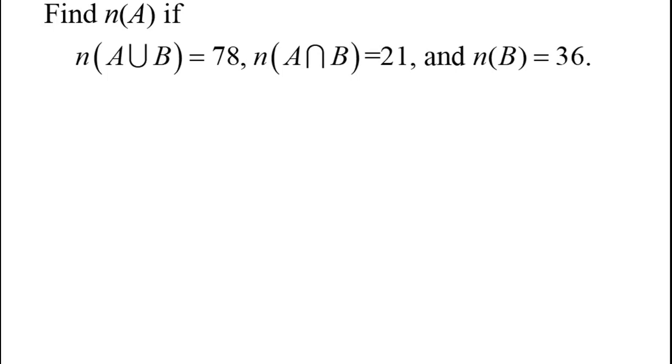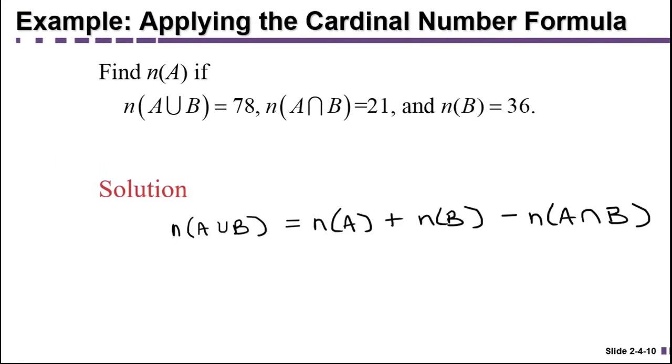One way to work this problem is just to plug into the cardinal number formula, which relates the number of elements in the union with the number of elements in the intersection. The number of elements in A union B is the number in A plus the number in B minus the number in the intersection or overlap.